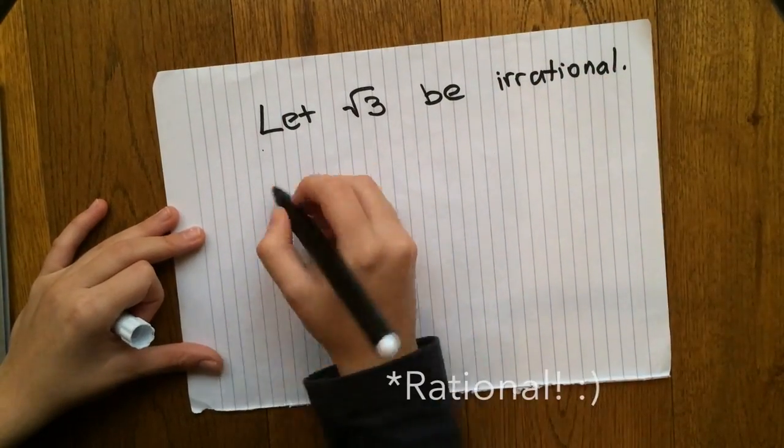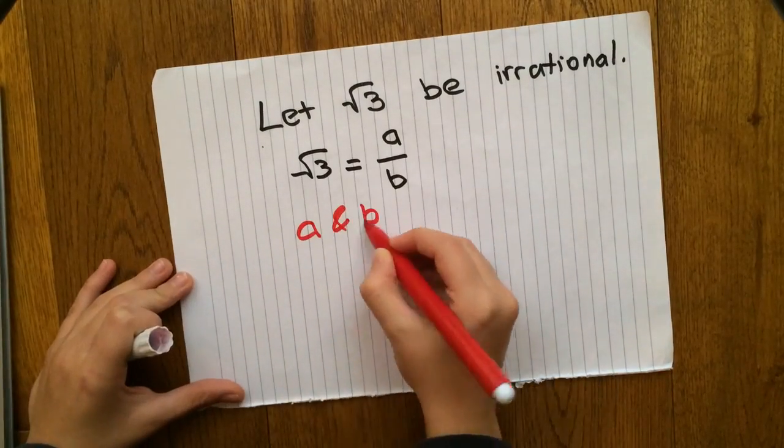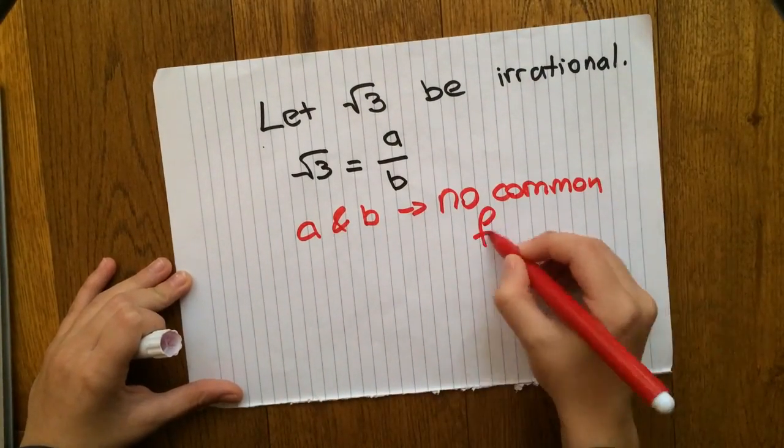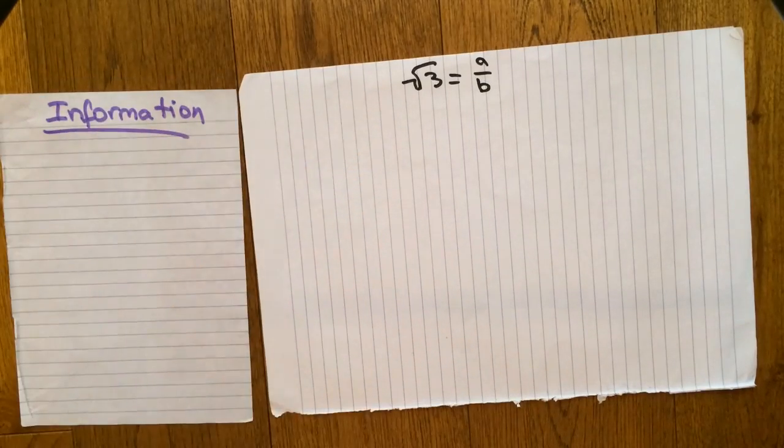Therefore, we can easily write the square root of 3 as a over b, where a and b are in their simplest forms, which means they have no common factors. I created an information log to our left so I can write down any important notes that we find out during our calculations. As we said in our previous statement, square root of 3 can easily be written as a over b.